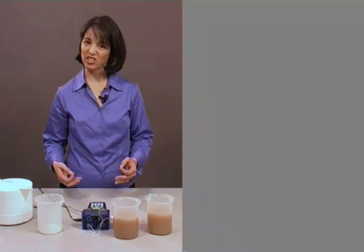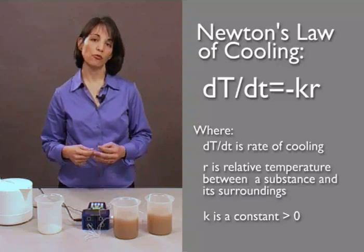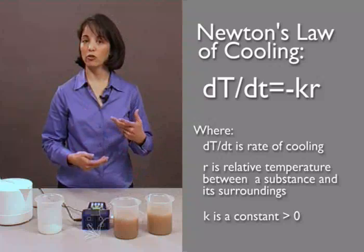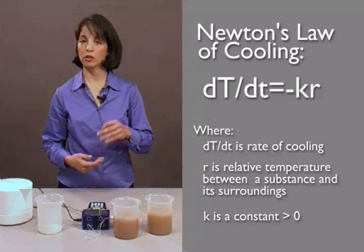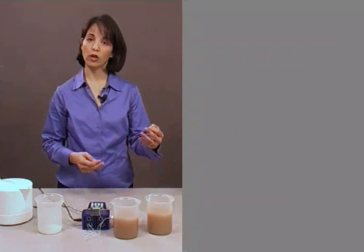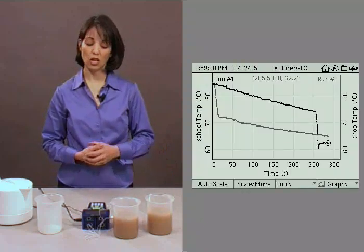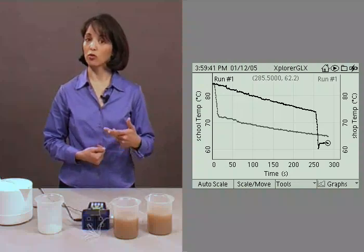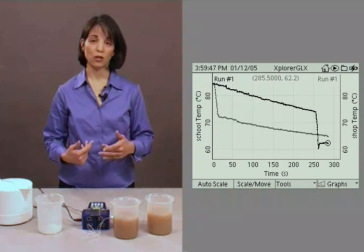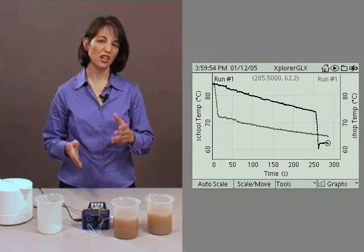And now we've got our school temp and our shop temp. And now we can actually look at this data. We've got a scientific principle going on here. It's called Newton's Law of Cooling, which essentially states that the temperature differential between a substance and the environment around it, the greater it is, the greater the rate of cooling of the substance. In other words, the coffee, which was hotter than the coffee and cream, cooled at a greater rate than the coffee and the cream. And if you look at your data, you can see this. You can see qualitatively that the slope of your shop temp is not as steep as the slope of your school temp for the five minute period.